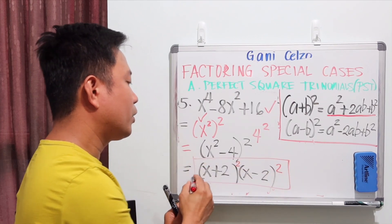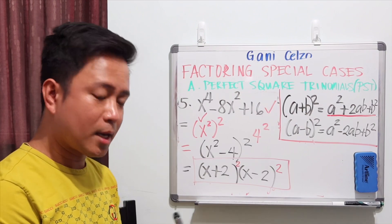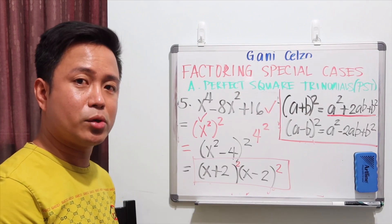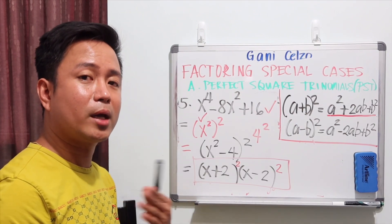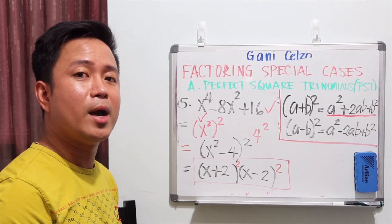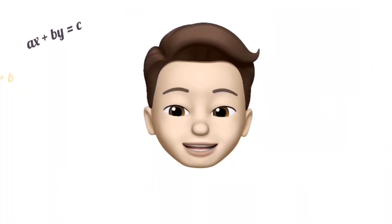So the final answer can be written as (x + 2)² (x - 2)², or you can write four parentheses: (x + 2)(x + 2)(x - 2)(x - 2).